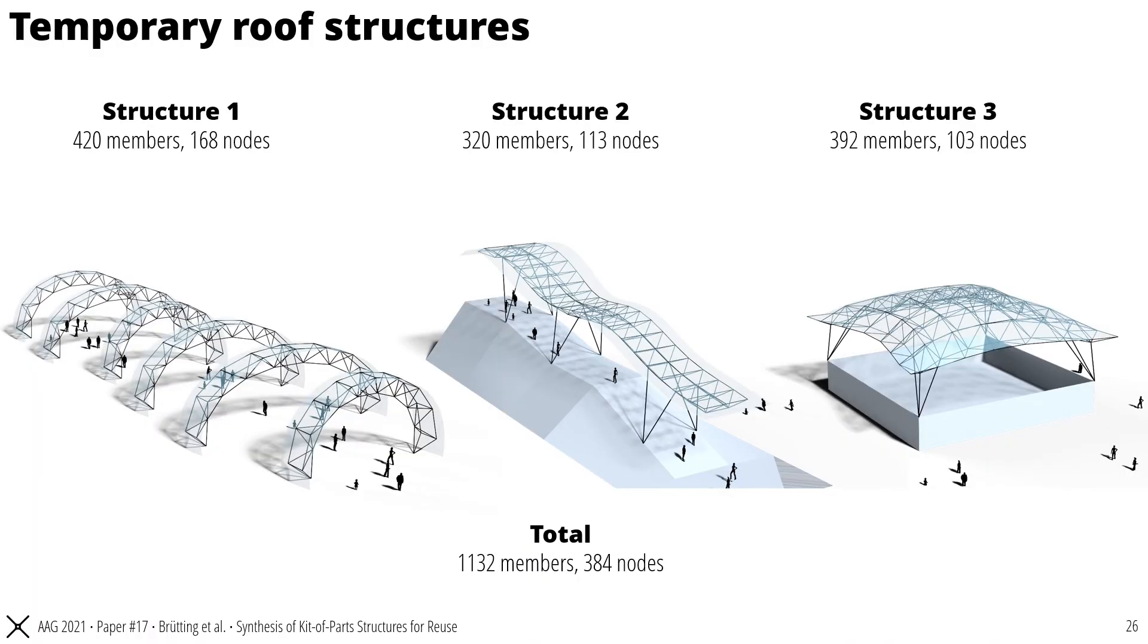Let's look at some case studies. Here you see three space frame structures thought of as temporary roofs, for example, used in the case of different events. The structures have between 300 and 420 members, and 100 to 160 nodes. And now we would like to apply our algorithms to design a common kit of parts to build the three structures.